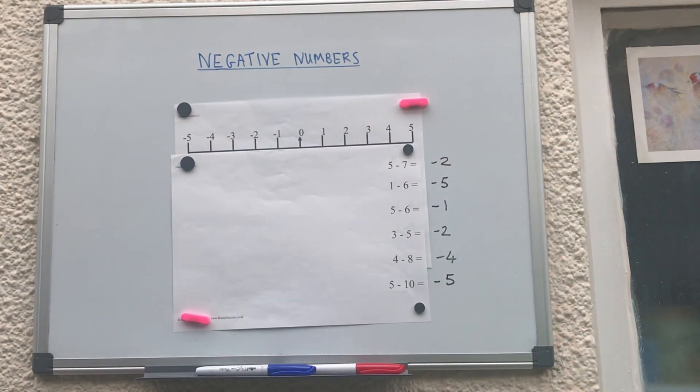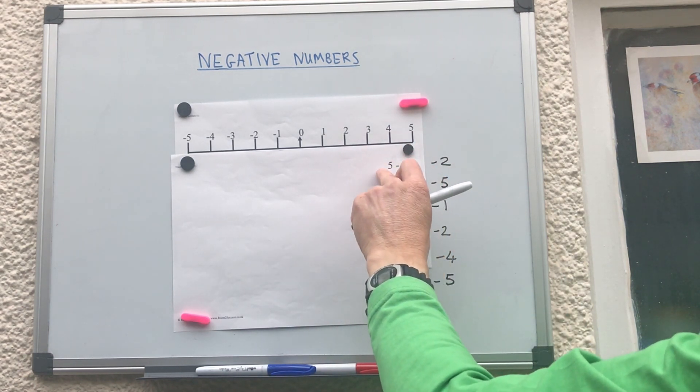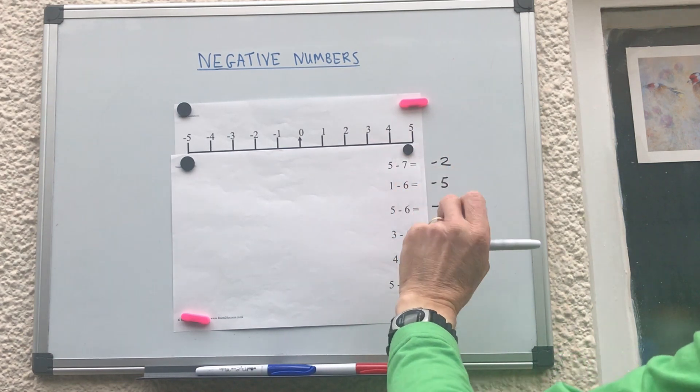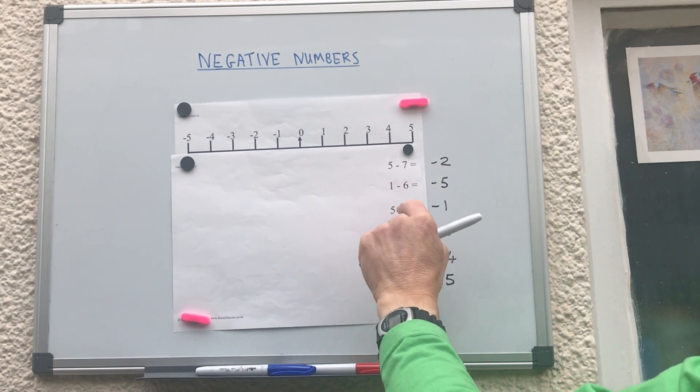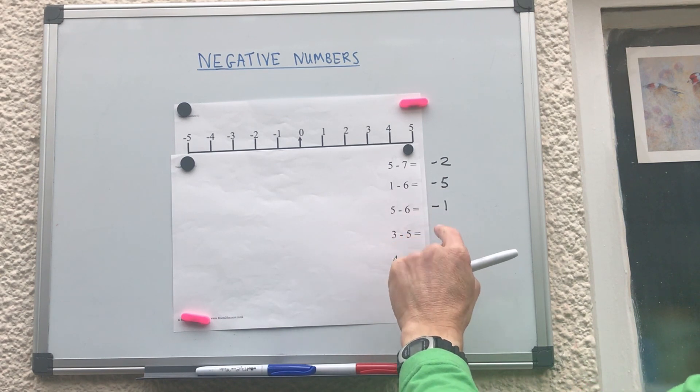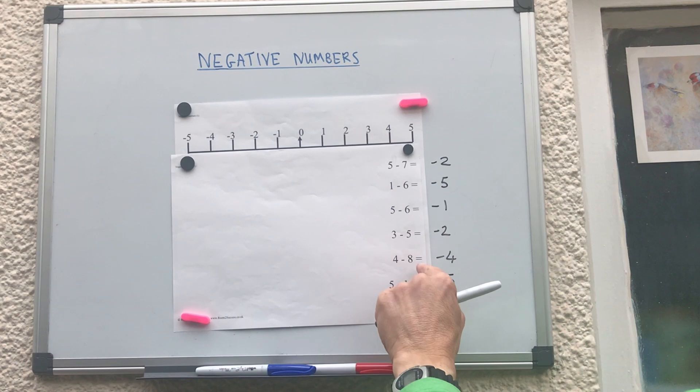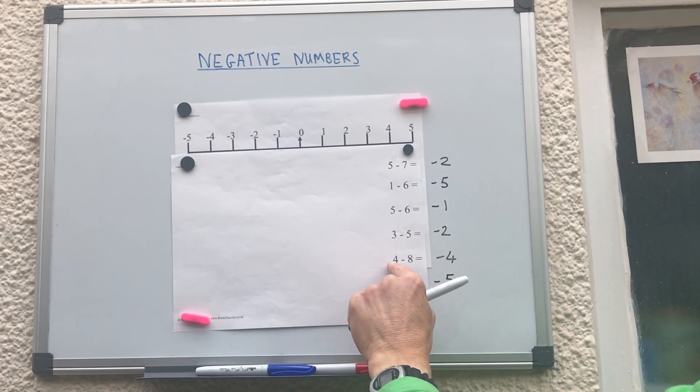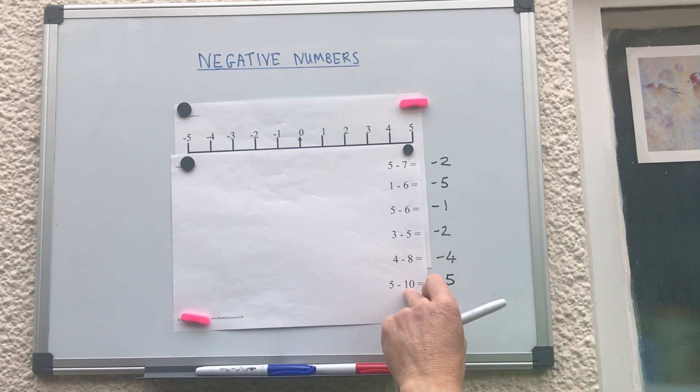So you might have noticed something here. If you look at these answers, five take away seven, all we do is seven minus five, which is two and put a minus sign in front. One take away six, all we've got to do is six take away one, which is five and put a minus sign in front. Six take away five is one, put a minus sign in front. So three minus five, it's just five take away three, which is two, put a minus sign in the front. Four take away eight, just eight take away four, which is four, put a minus sign in front. Five take away ten, just do ten minus five which is five, put the minus sign in front.